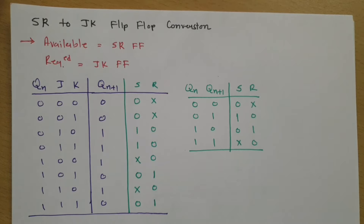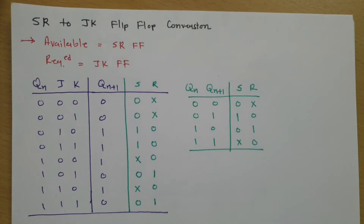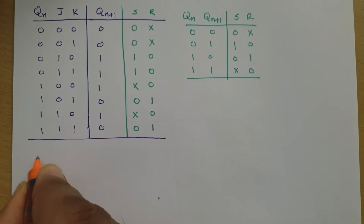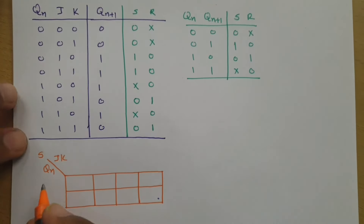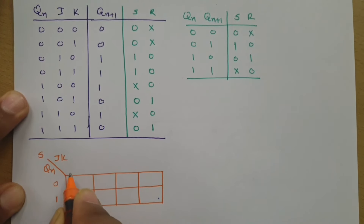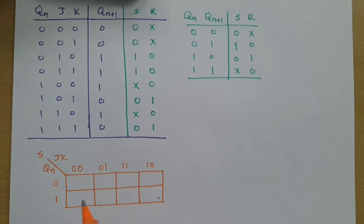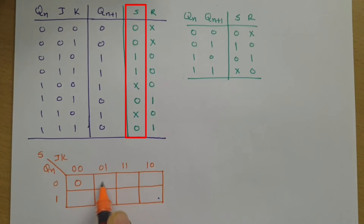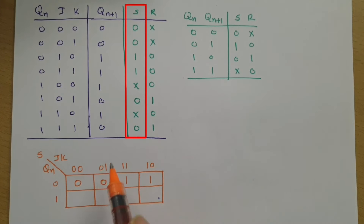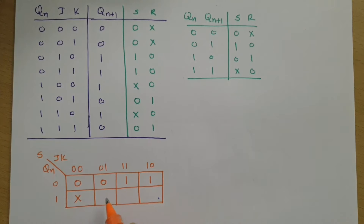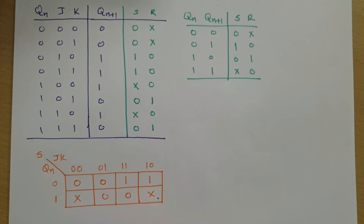The next step is to solve the K-map. We need to solve the K-map for S and R with respect to inputs Q(n), J, and K. For the K-map of S, Q(n) is 0 and 1, and JK is 00, 01, 11, 10. Placing the values of S: at Q(n)=0 we get 0, 0, 1, 1; then at Q(n)=1 we get don't care, 0, 0, don't care.